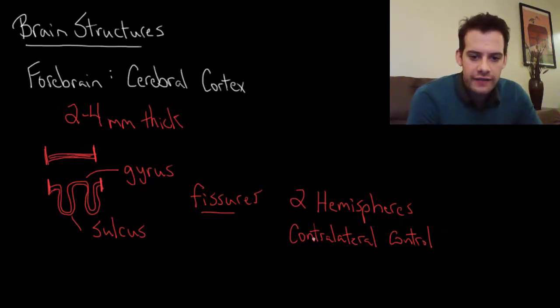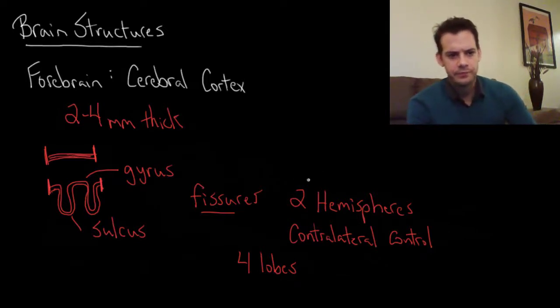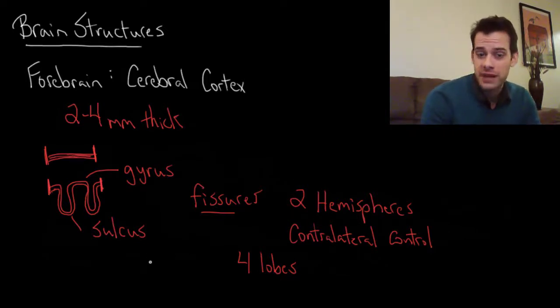That's the two hemispheres divided by this longitudinal fissure. We also divide each hemisphere up into four lobes. There's four main regions of each half of the brain. So in total you'd have eight lobes, but they're paired so you have two of each lobe, one on the left hemisphere and one on the right hemisphere. Let's take a look at some pictures of the brain to see what we're talking about here.